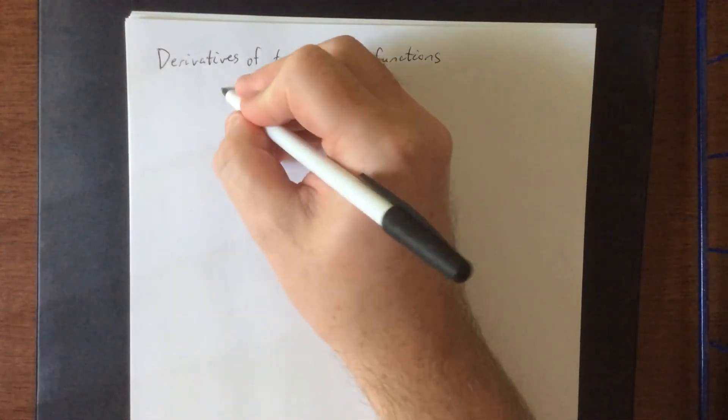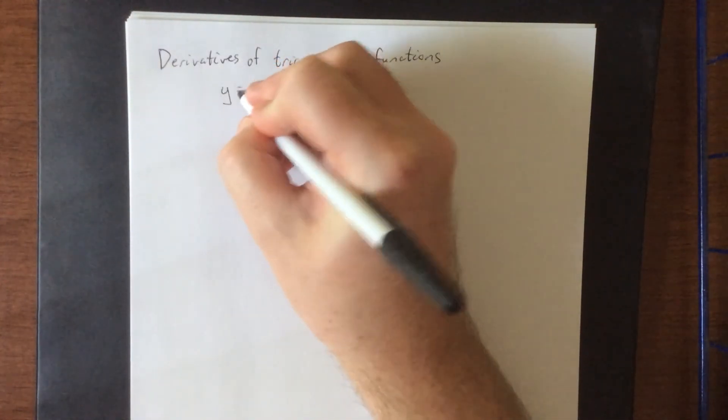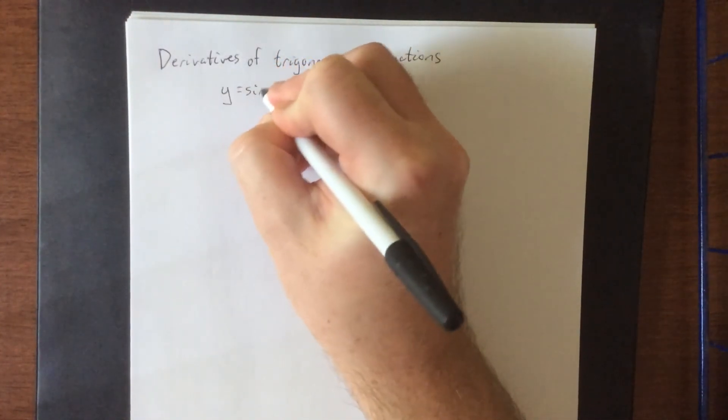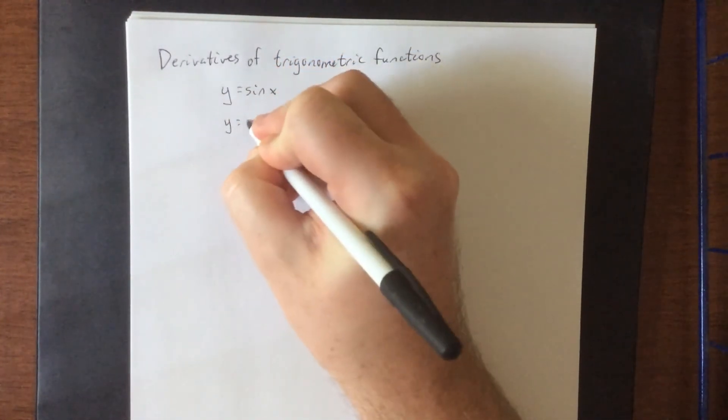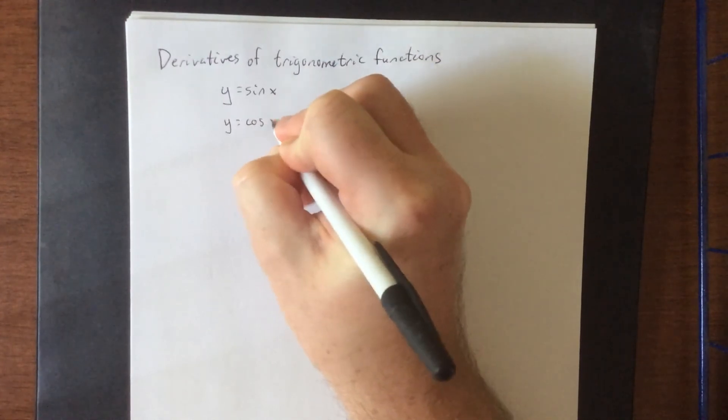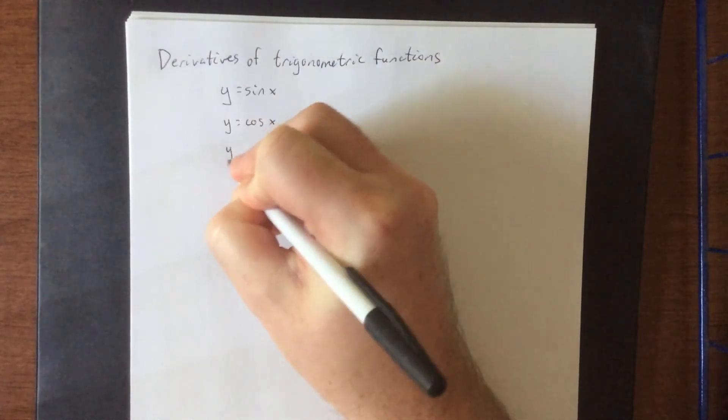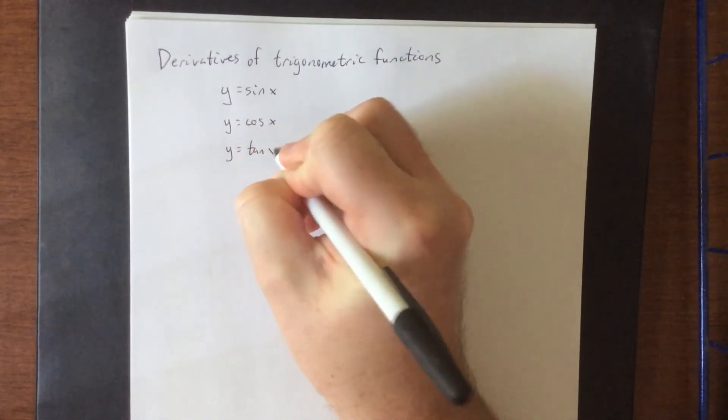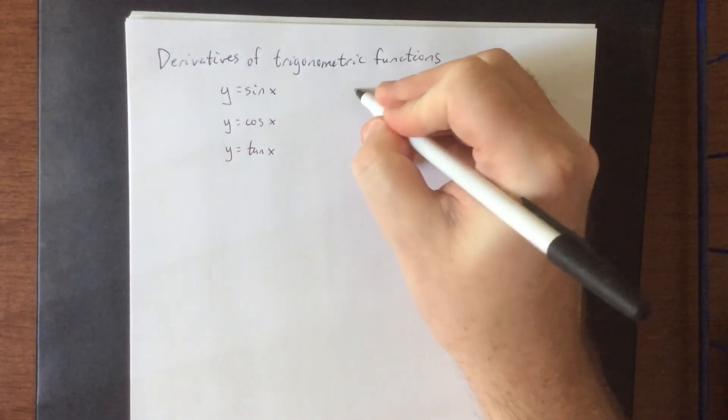In this section, we're going to be taking a look at our trigonometric functions and talking about the derivatives of those trigonometric functions. Before we get into the derivatives, I just want to talk about what these six trigonometric functions are and what some of the important relationships are that we're going to need.